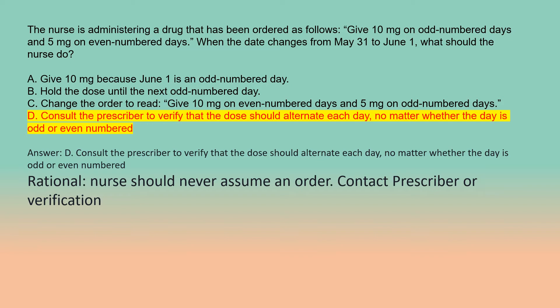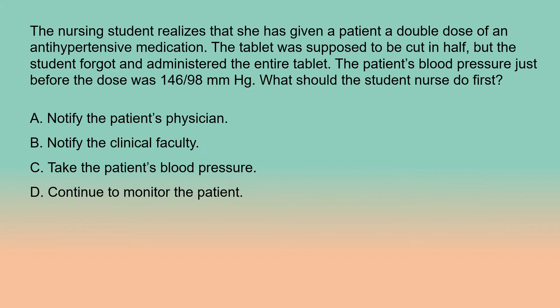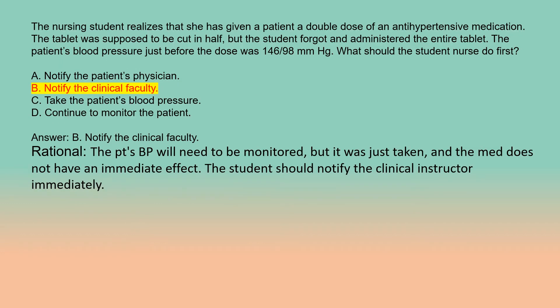A student nurse notes that the patient's blood pressure just before the dose was 146/98 mmHg. What should the student nurse do first? A. Notify the patient's physician. B. Notify the clinical faculty. C. Take the patient's blood pressure. D. Continue to monitor the patient. Answer: B. Notify the clinical faculty. Rationale: The patient's blood pressure will need to be monitored, but it was just taken and the medication does not have an immediate effect. The student should notify the clinical instructor immediately.